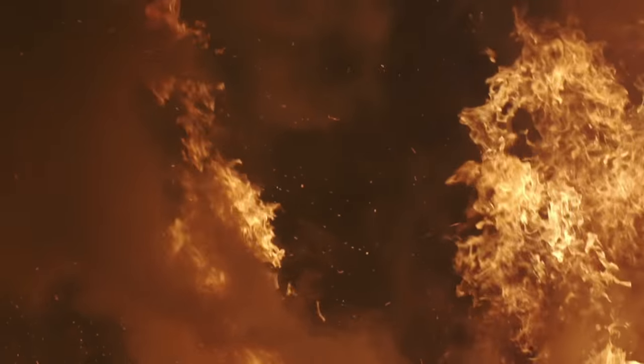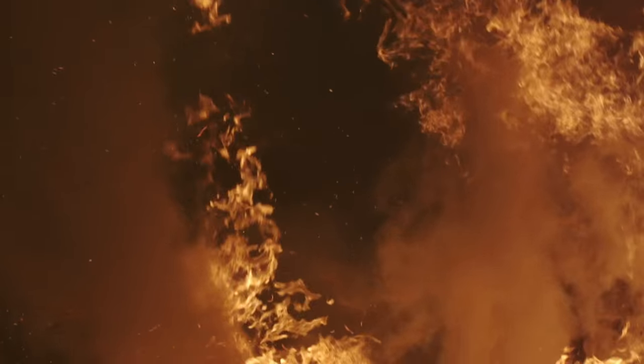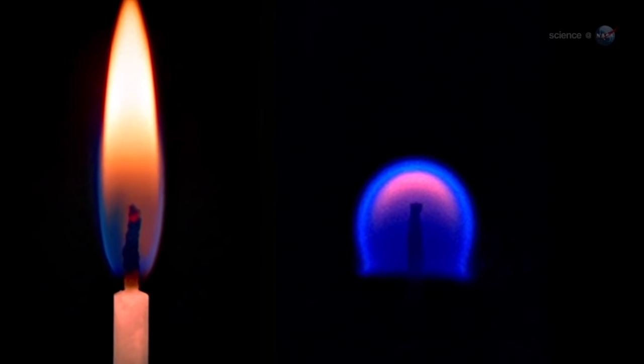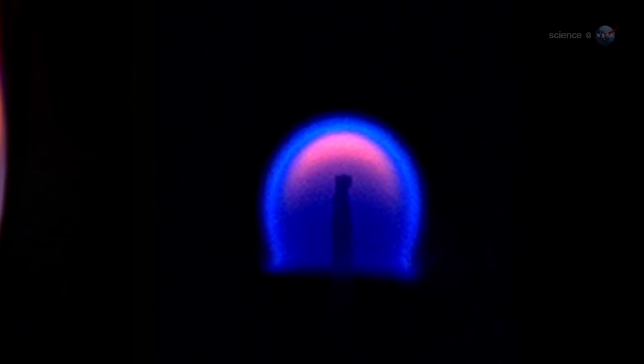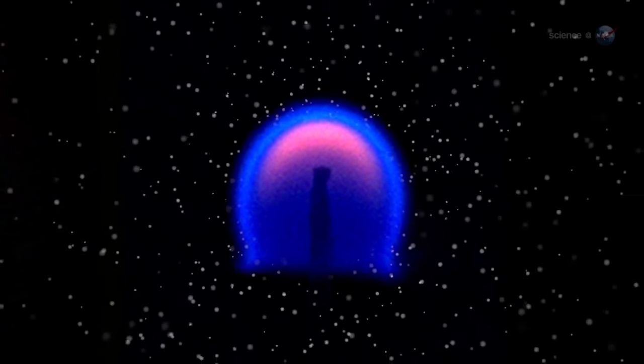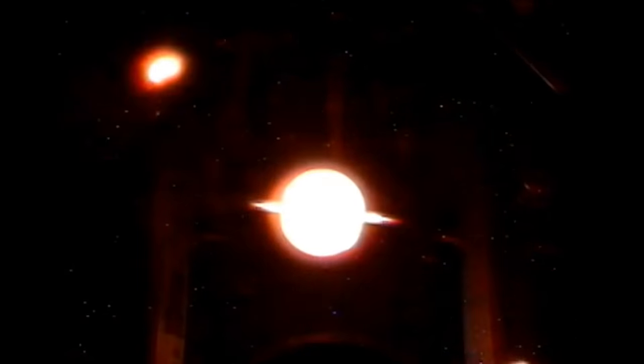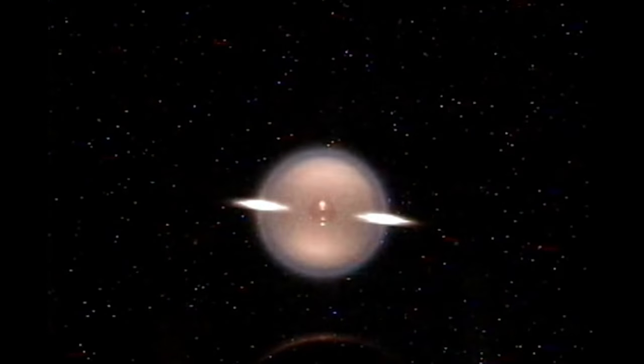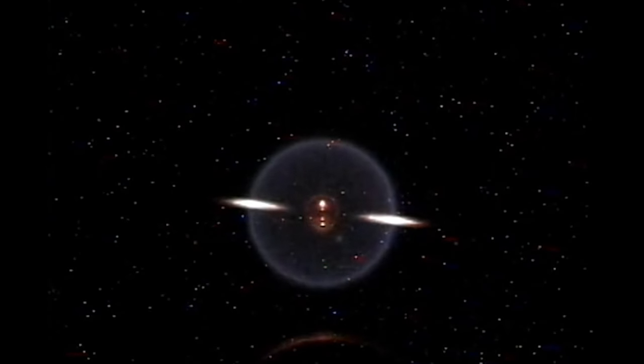Flames on terra firma have buoyancy, which gives them that classic shape. But in microgravity, flames don't rise. Instead, they stay blobby and spherical. And flames in space also spread differently, as in they'll just spread in whatever direction the spacecraft's ventilation system sends them. So if you don't know what you're doing, don't light fires in space.